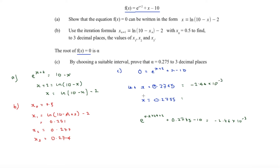For x = 0.2755, computing f(x) gives 8.28 × 10⁻³. Since there is a change of sign between these two values, we have proved that α = 0.275 to three decimal places.